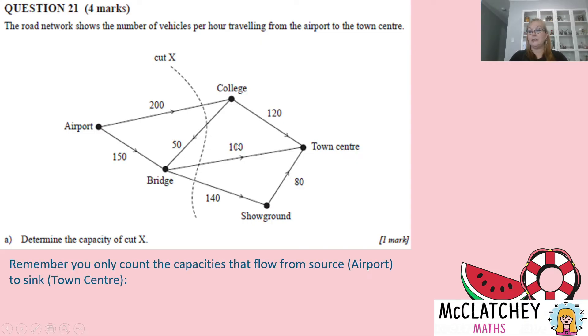However, we're only going to count capacities that go from the source, which is the airport, to the sink, which is the town center. So only if the flow is in that direction, we can see this one's in that direction, but that one is not. So we won't count from the college to the bridge. From the bridge to the town center is going from source to sink. And from the bridge to the show ground is going from source to sink. So we've got three that we're actually going to add together. That's those three there. So if we add those three together, we get 440 vehicles per hour. And we've correctly determined the capacity of cut X, we get our first out of four marks.